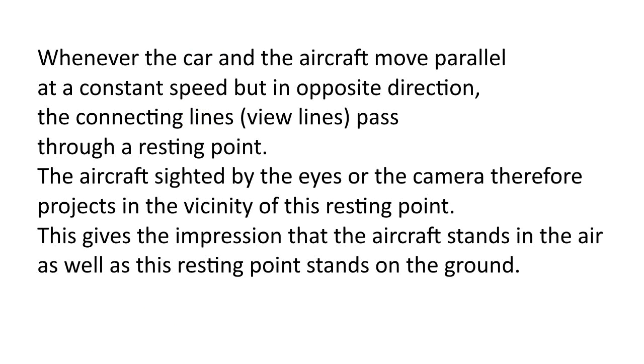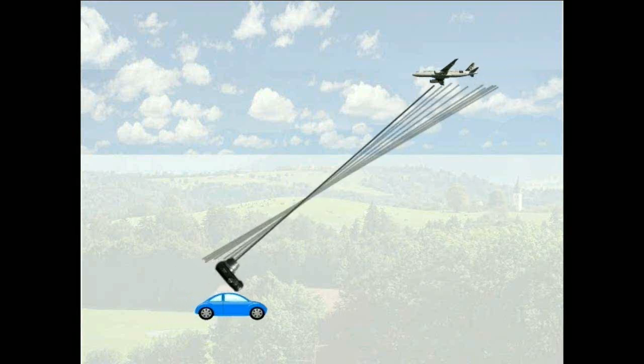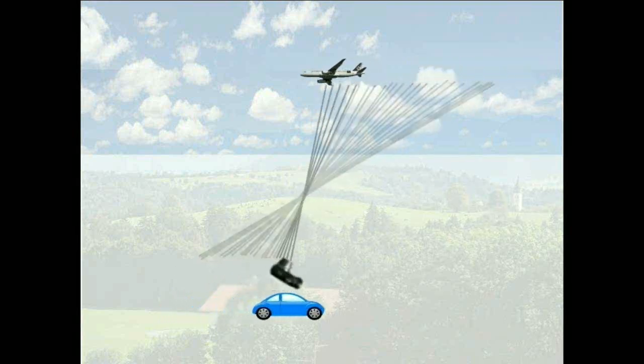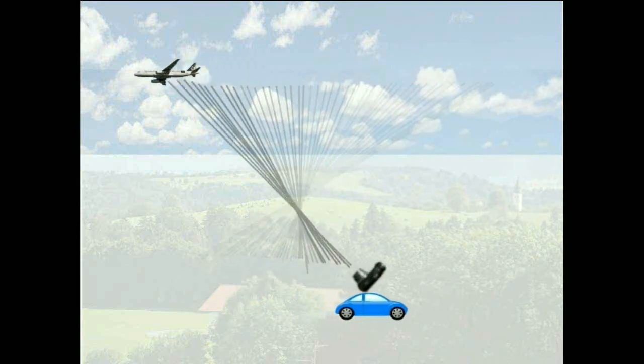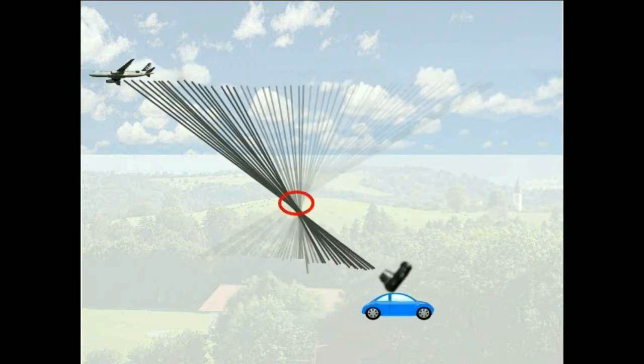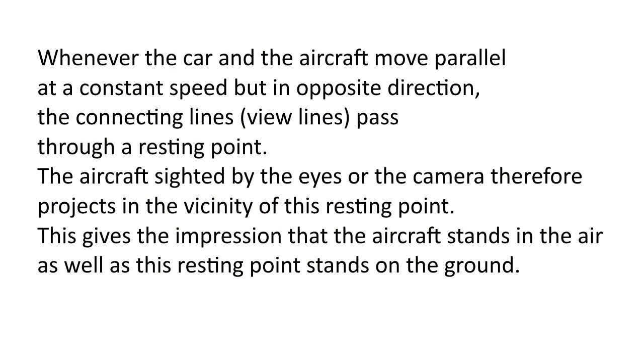Whenever the car and the aircraft move at constant speed in parallel, but in opposite directions, the connecting lines, that is, when looking from the car to the plane, pass through a point that does not move on the camera image that is resting. This means that when I look at the plane from the car, or aim at the plane with a camera, I see the plane near that point of rest. And that's why it gives the impression that the plane is standing in the air, because it is right next to this point of rest, and this resting point is a fixed object.